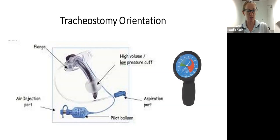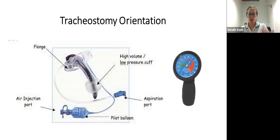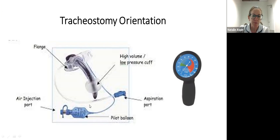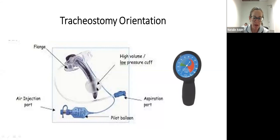Just talking about tracheostomy orientation and some of the types of tracheostomy before we go on to a practical demo. This slide shows a typical tracheostomy tube which we see in practice - this is a Portex trache. Talking through the different parts: at the top we've got the flange, which is the part of the trache that's on the outside of the patient, with little holes for the trache tie to hold it in place in the patient's neck. We've got the trache tube and then the cuff.